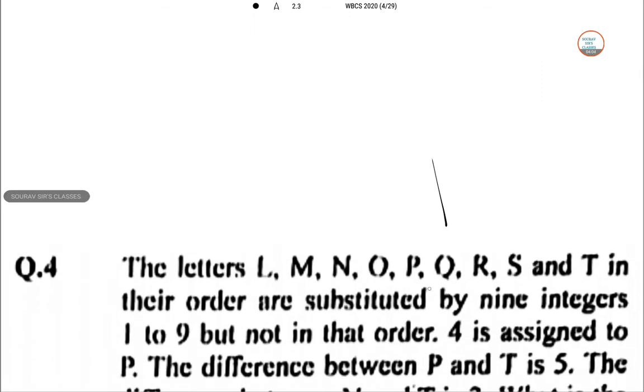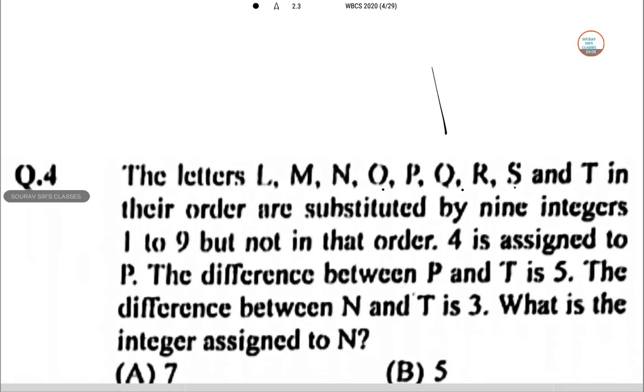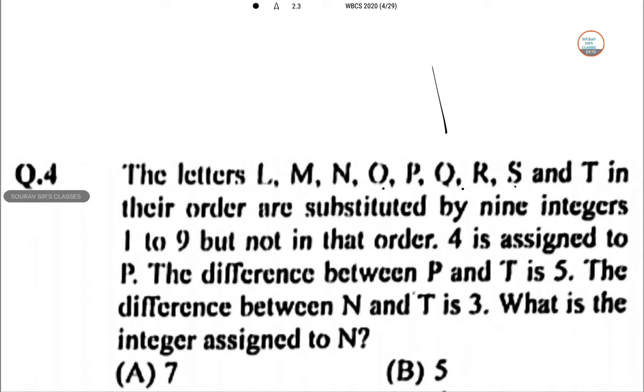So they say the letter L, M, N, O, P, Q, R, S, T, 9 letters in their order are substituted by 9 integers 1 to 9 in that same order. So 4 is assigned to P. The difference between P and T is 5 and the difference between N and T is 3. So what is the integer assigned to N?